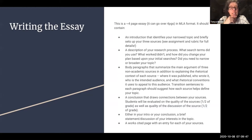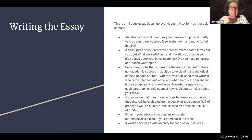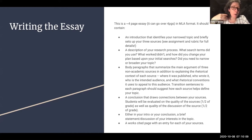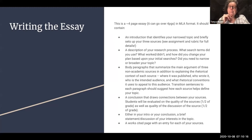Somewhere in your essay, probably at the beginning, include a description of your research process. It would be illogical to talk about your research process after you've discussed your research, so foreground that. This should be concrete — not just 'I did some Google searches' or 'I used the library database,' but: what search terms did you use? What worked and what didn't? How did you change your plan based on initial searches? Did you narrow your topic or make it a bit broader?